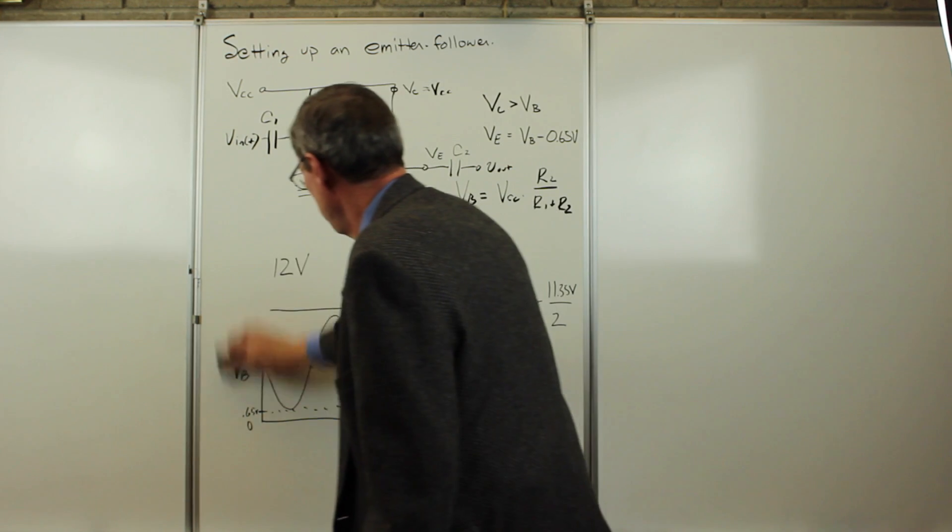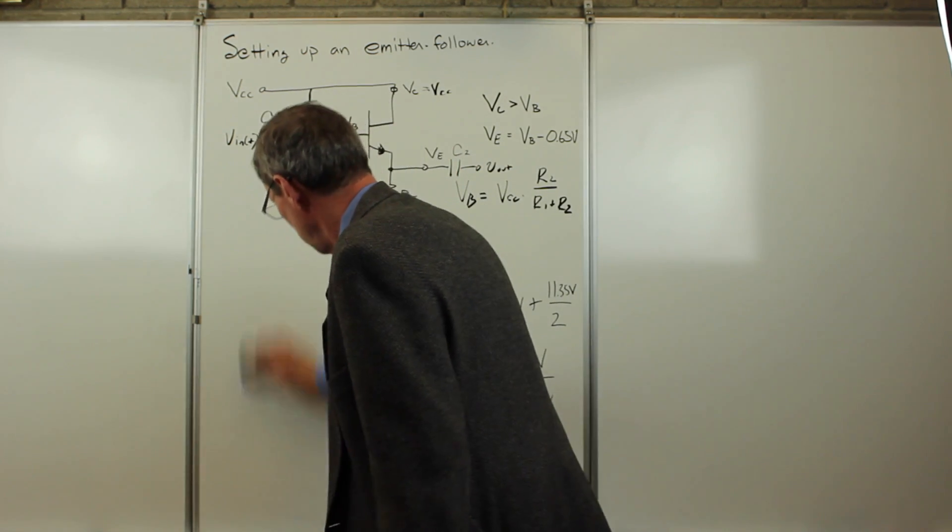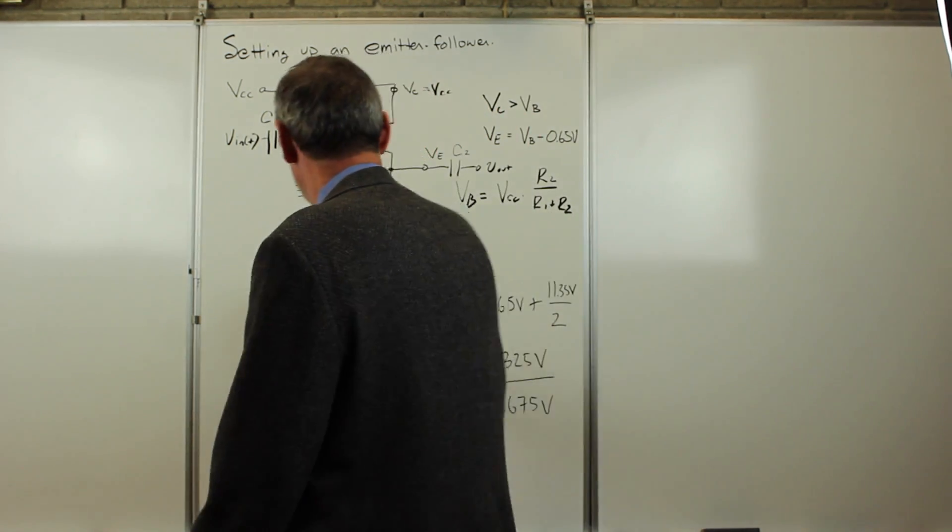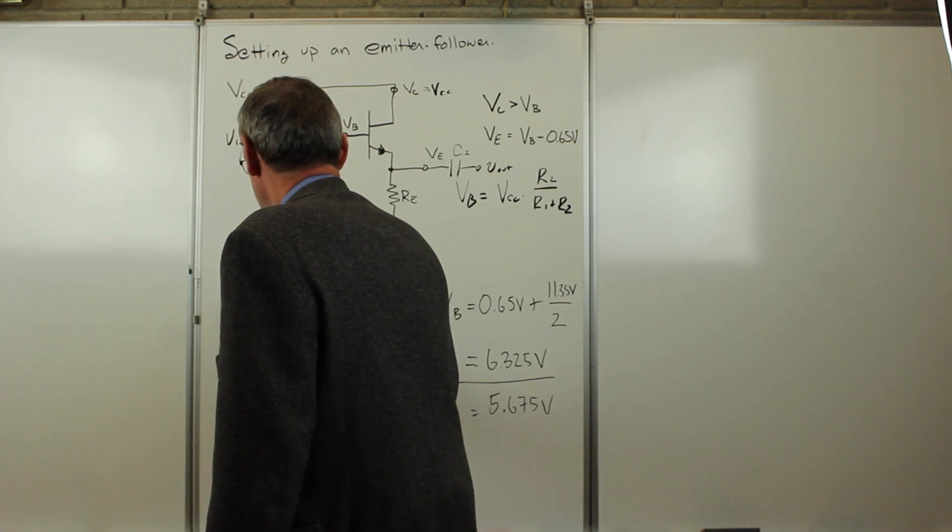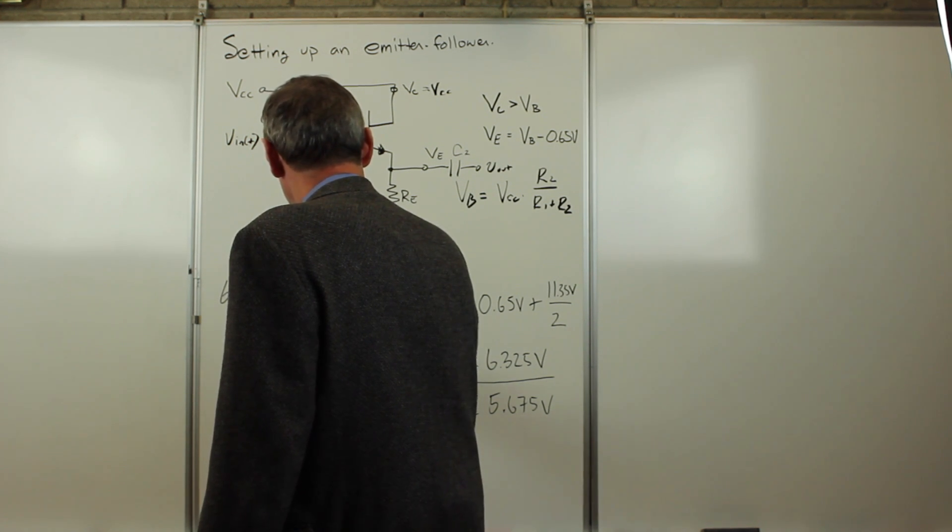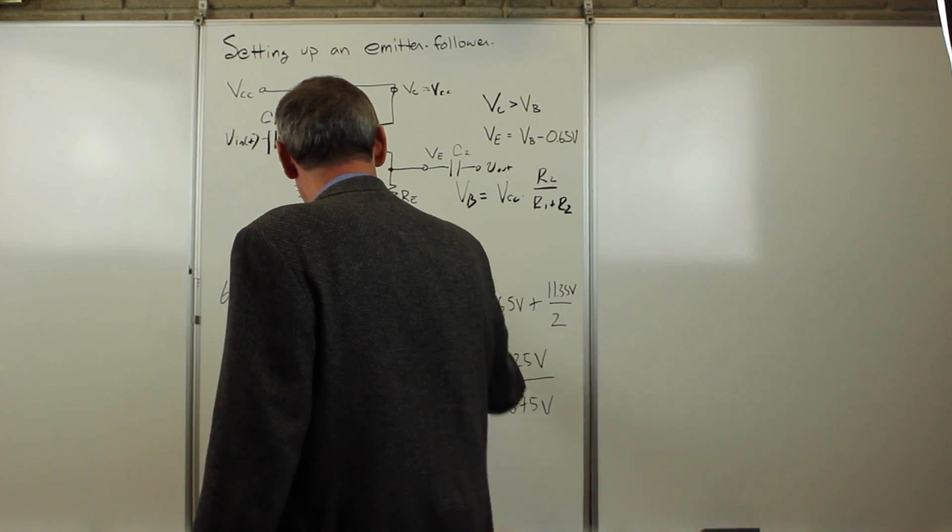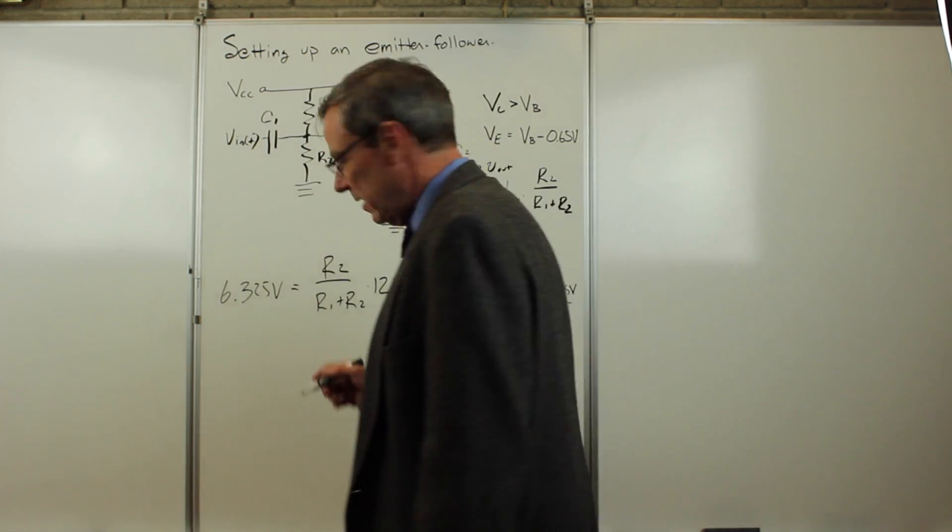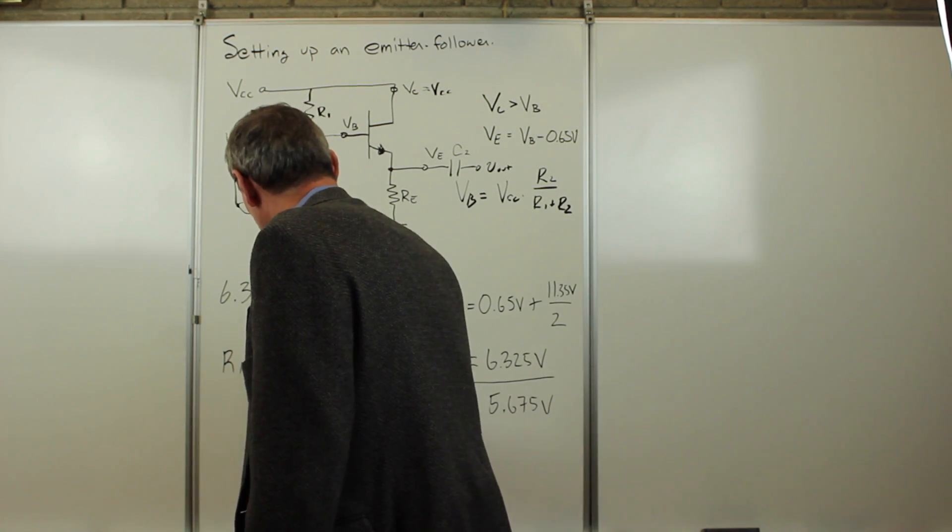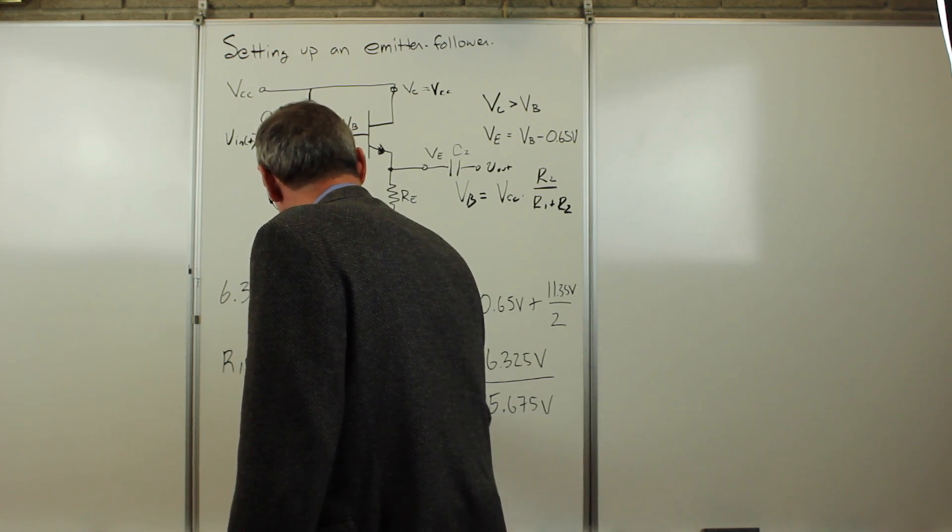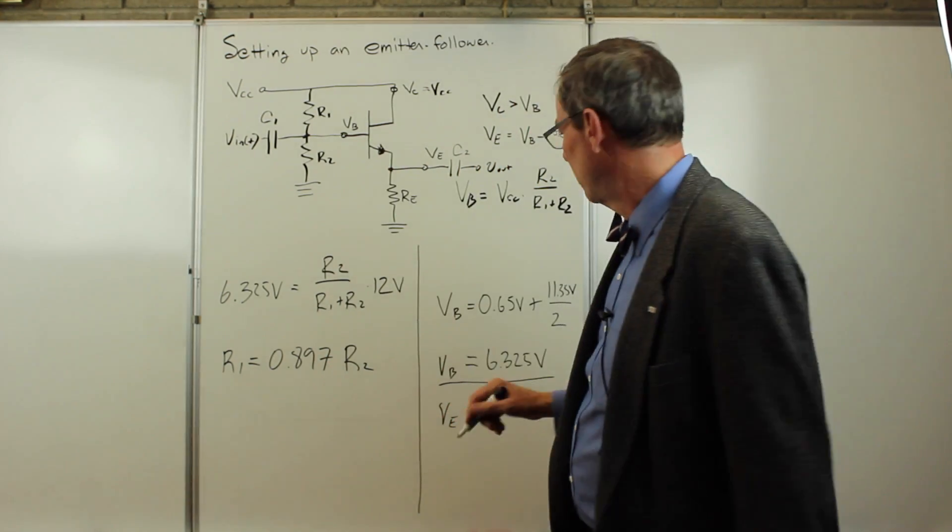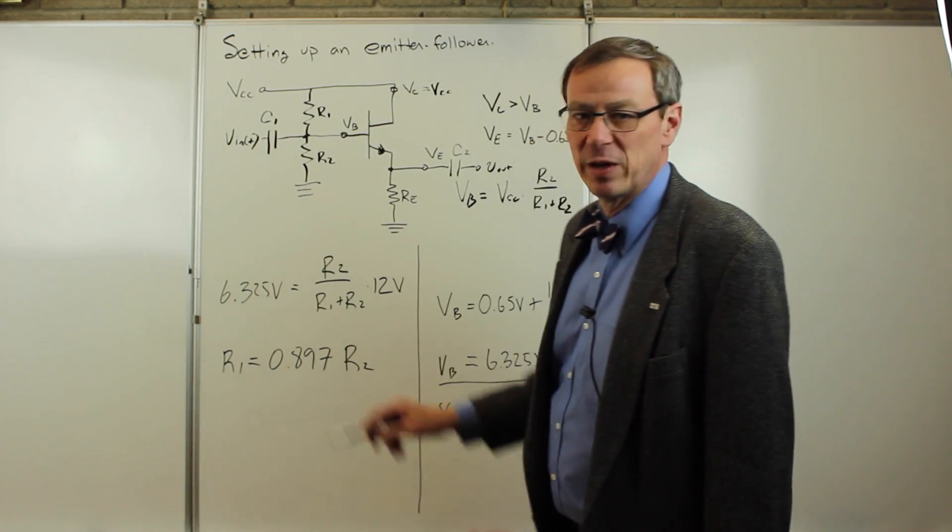What we have to have is 6.325 volts equals R2 over R1 plus R2 times 12 volts. If we've got that, we can come up that R1 has to be 0.897 times R2. So whatever R1 is, it's got to be about 90% of R2. R2 is just slightly larger. That makes sense, it's slightly above halfway in the 12 volts.